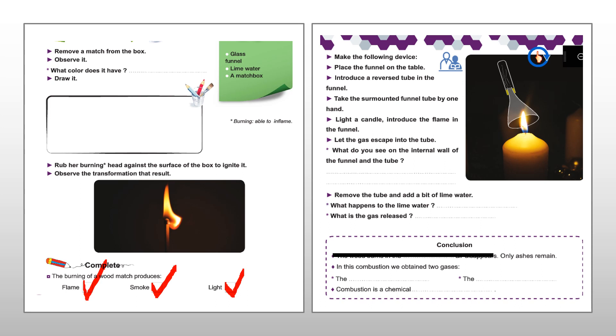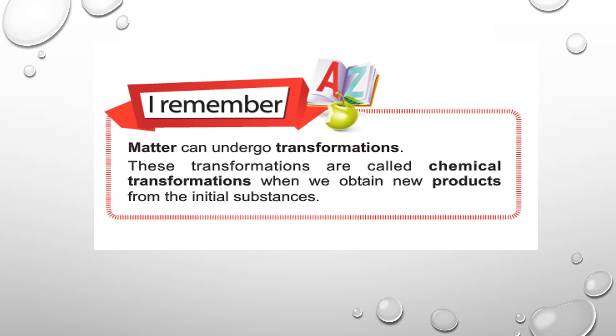So, combustion is a chemical reaction. Now, I read, I remember, it's for understanding. Matter can undergo transformations. These transformations are called chemical transformations when we obtain new products from the initial substances.